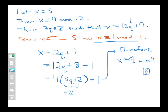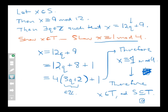Since X is congruent to 1 mod 4, we can conclude that X belongs to T. Therefore S is a subset of T, because I've proven that if I take an arbitrary value of X out of S and rewrite it, it satisfies the criterion to belong to T. I picked a random element out of S and showed it belongs to T — that's exactly what it means to prove subset inclusion. That's the end of that particular proof.